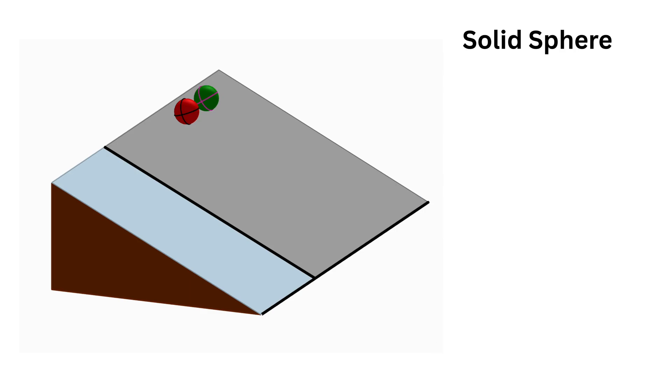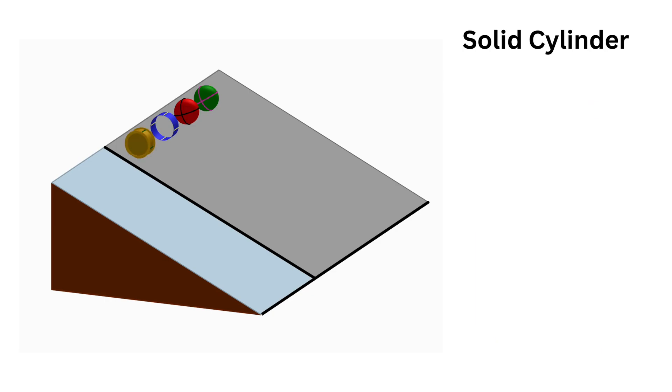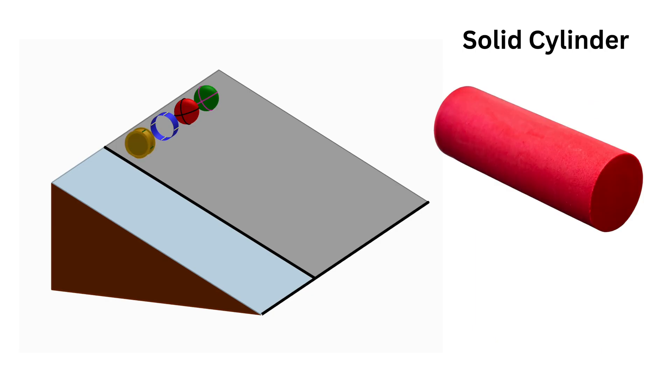Next is a hollow cylinder, kind of like a ring or a pipe. Then there's a solid cylinder, similar to a mechanical roller.